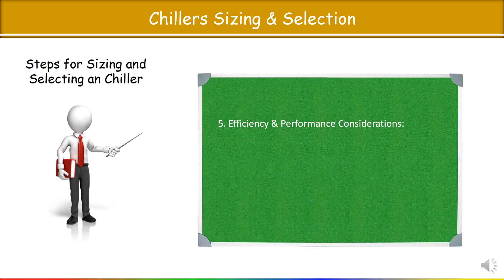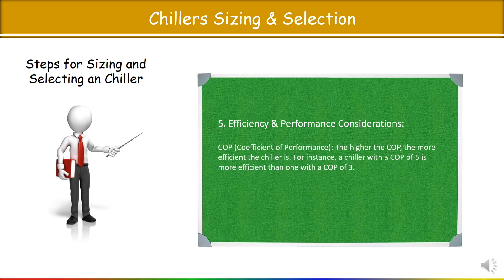Step 5 is efficiency and performance consideration. COP — Coefficient of Performance. The higher the COP, the more efficient the chiller. For instance, a chiller with a COP of 5 is more efficient than one with a COP of 3. EER — Energy Efficiency Ratio — is similar to COP but used in different regions. A higher EER means better efficiency.